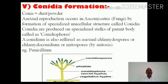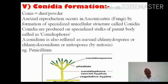The fifth method is conidia formation. 'Conidia' is a Latin term meaning dust or powder, because the spores produced by this method are so small they resemble dust. Asexual reproduction by conidia occurs in Ascomycetes, a group of fungi, by the formation of specialized unicellular structures called conidia. Conidia are produced on specialized stalks called conidiophores. Conidia are also referred to as asexual chlamydospores, chlamydoconidia, or mitospores, as they are produced by mitosis. Conidia formation is commonly observed in fungi like Penicillium.